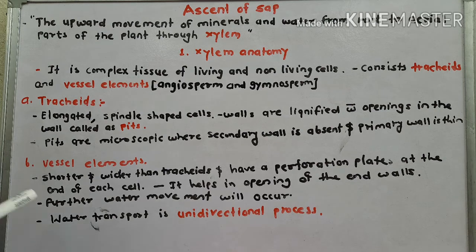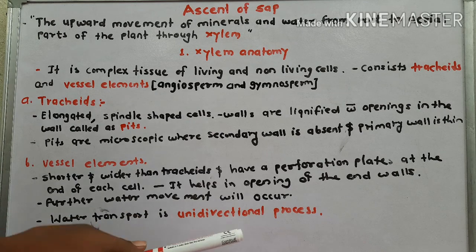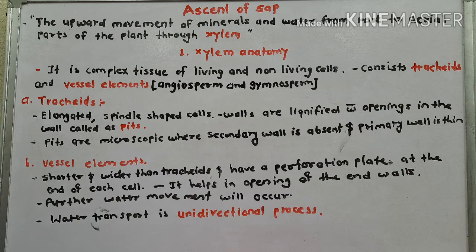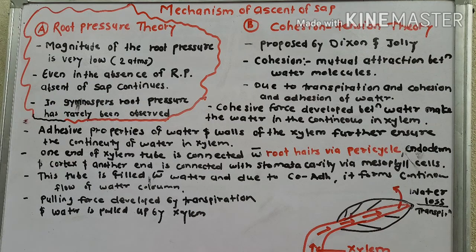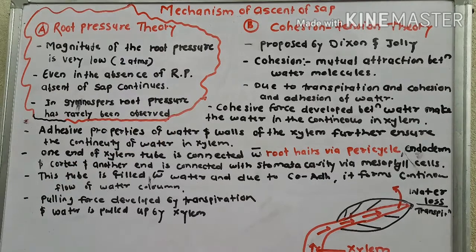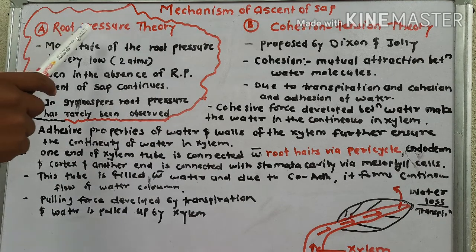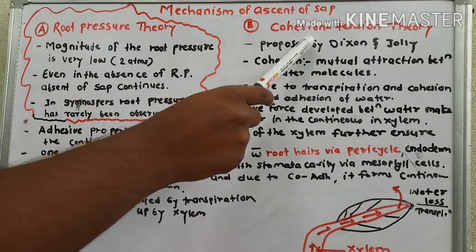Water transport is a unidirectional process, so bidirectional flow is not possible. Regarding the mechanism of ascent of sap, we have two important theories: first is root pressure theory, and second is cohesion-tension theory.